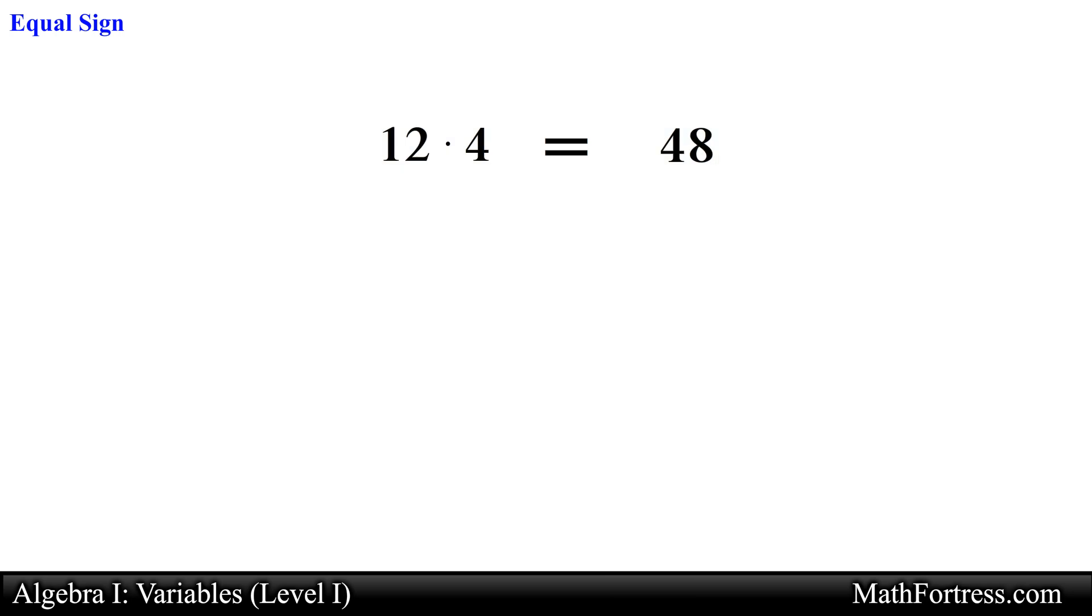So we write 12 times 4 equals 48 and you read this expression as 12 times 4 equals 48 or 12 times 4 is equal to 48. Another way of reading this expression is 12 times 4 is 48. Other forms are acceptable ways of reading this expression.